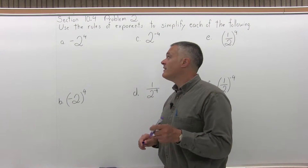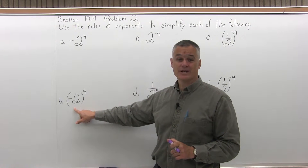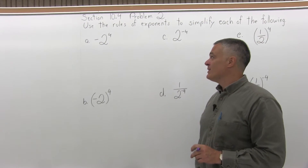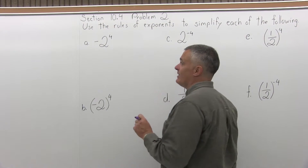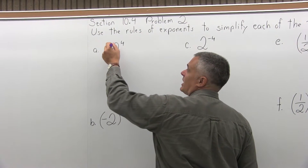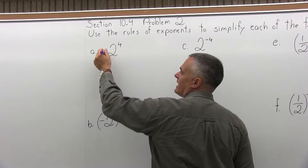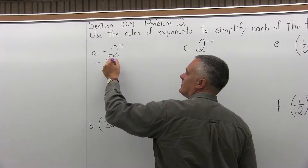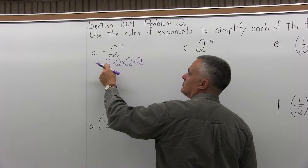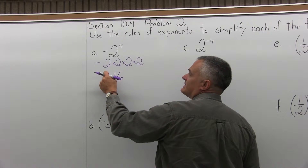Part A: you have negative 2 to the fourth power. The negative is not being raised to the fourth power — only the 2. So the negative stays out front and you have 2 to the fourth. 2 times itself 4 times: 2, 4, 8, 16. The answer is negative 16.